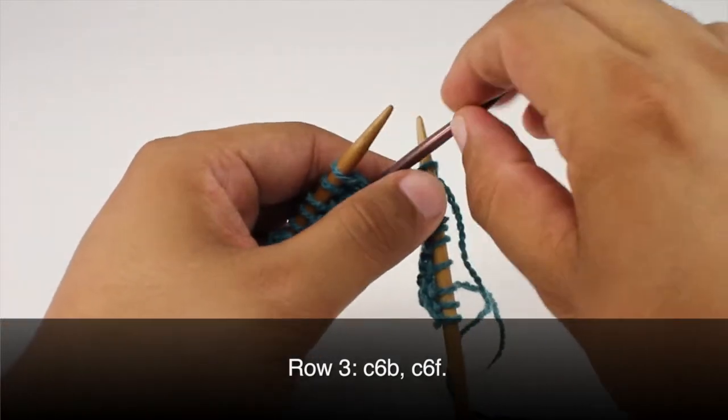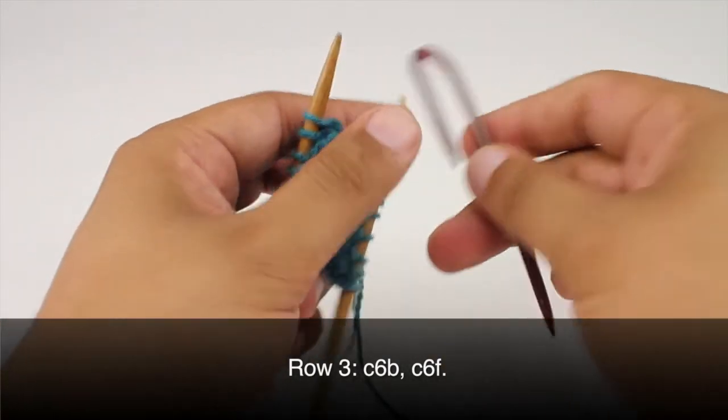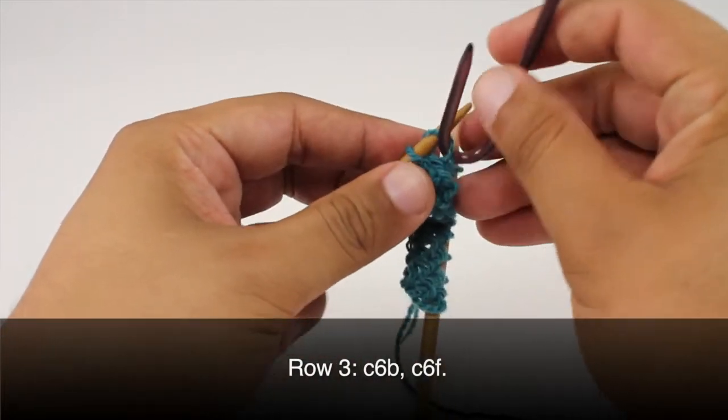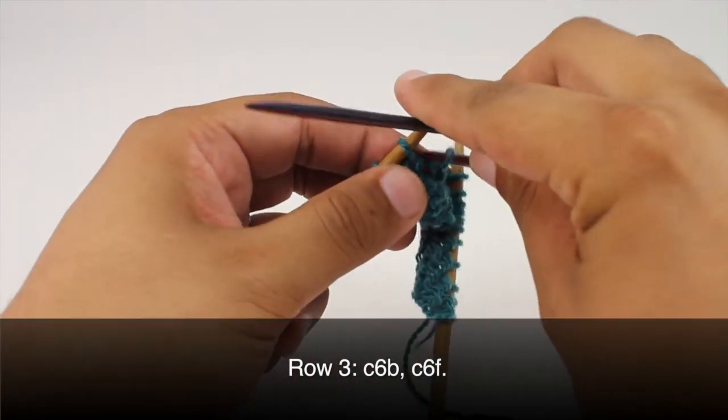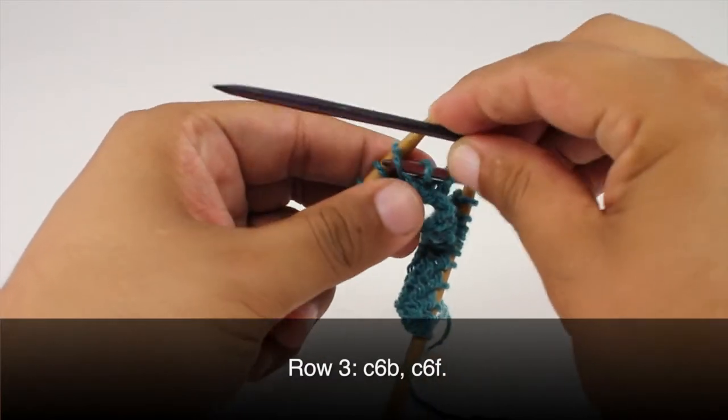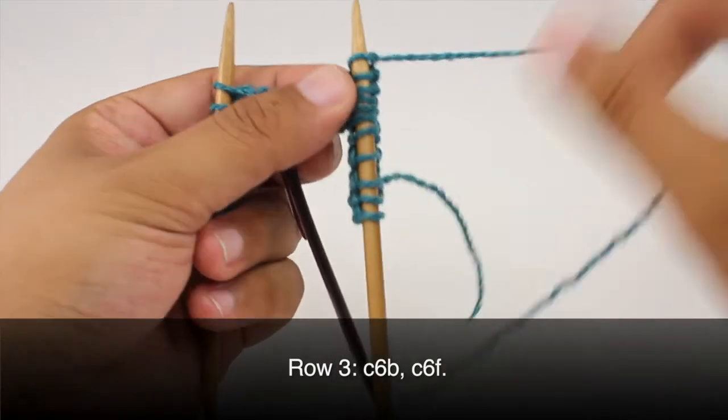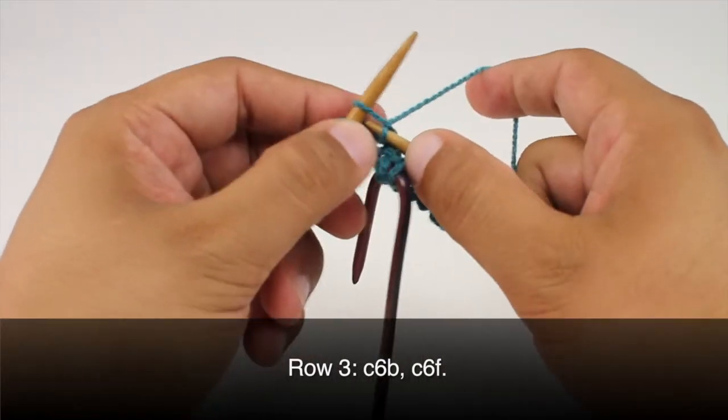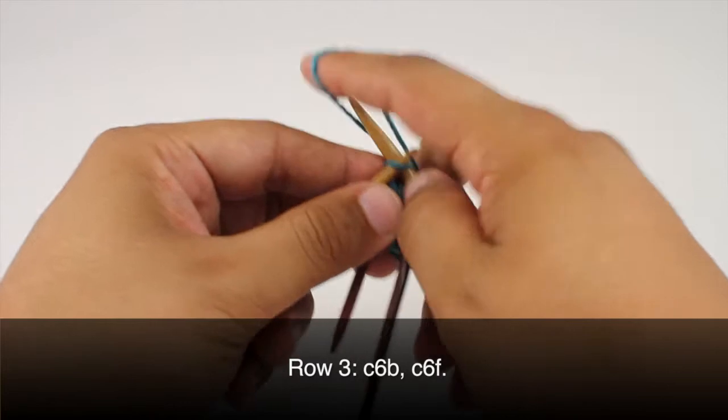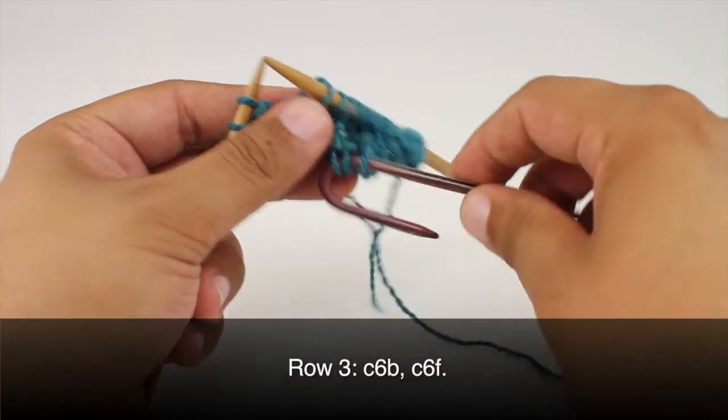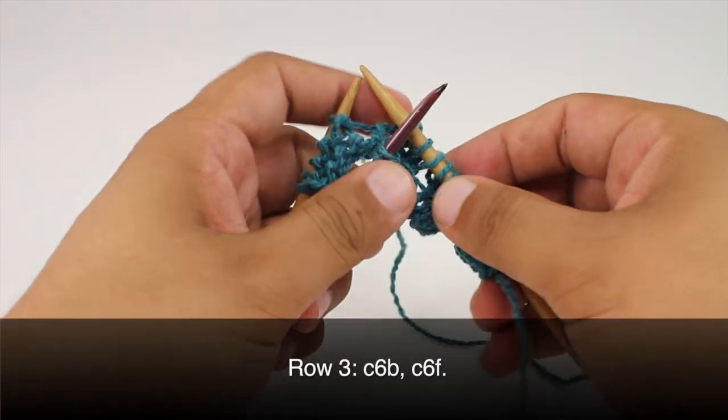Next, we're going to do a cable six forward or cable six front and we're going to slip the next three stitches from our main needle onto our cable needle and hold that in front of our work. Then again, we're going to knit the next three stitches from our main needle. And then we'll knit the three stitches from our cable needle.